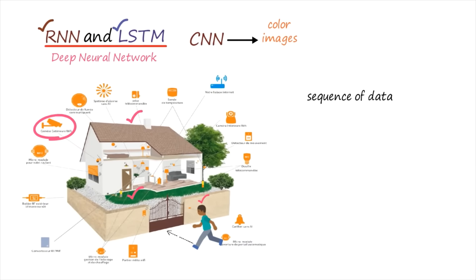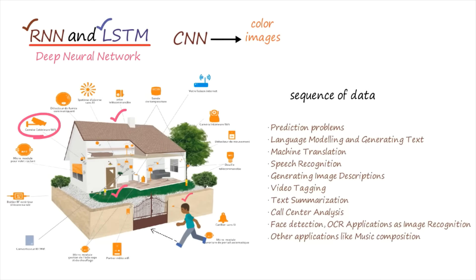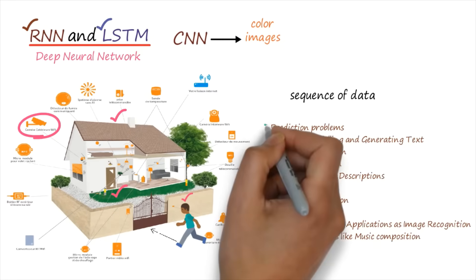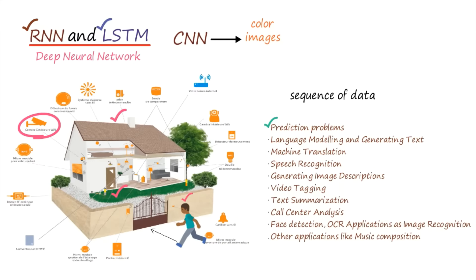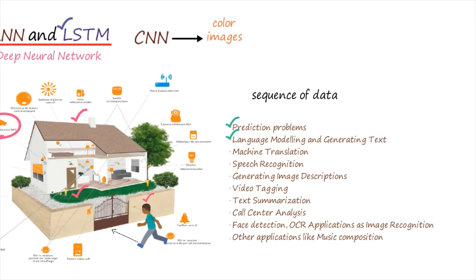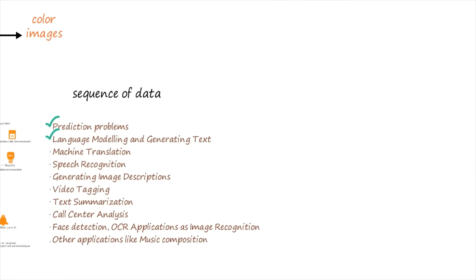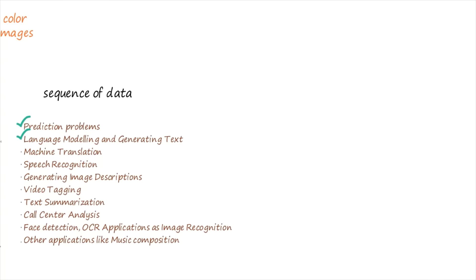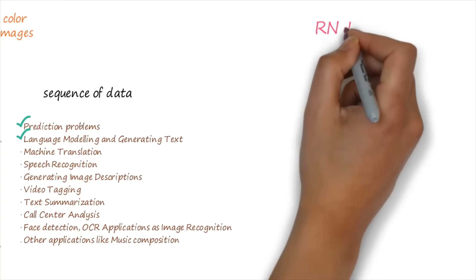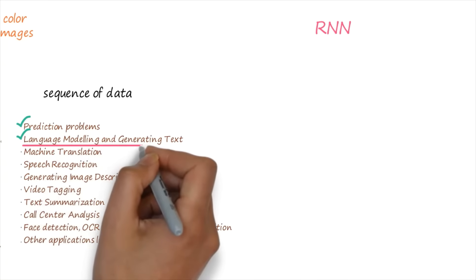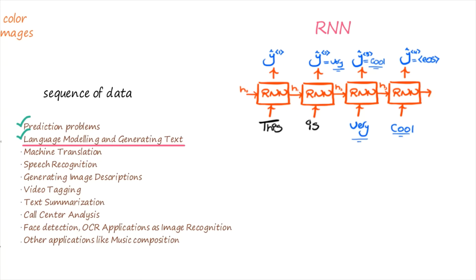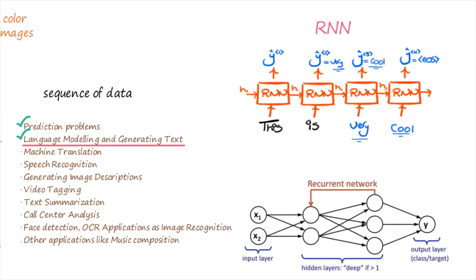This is the main application area of RNN and LSTM. There are several application areas — one is the prediction problem that I have now explained. Then there is one beautiful application of RNN, that is language modeling and generating text. So consider one situation where we will try to learn how this RNN is applicable for language modeling and text generation. For the time being, focus on language modeling.